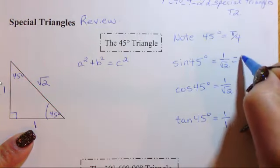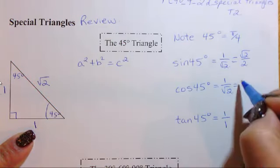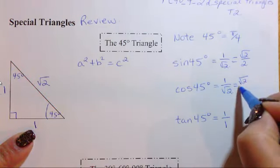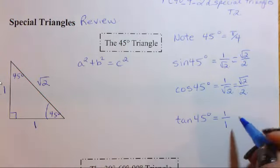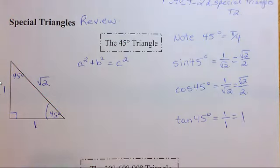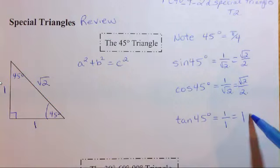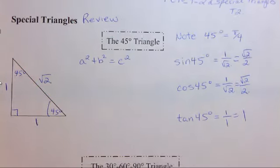All right, so why don't we rationalize and simplify everything. So we'll rationalize this so that there is no root 2 in the denominator, so we get root 2 over 2, and this reduces to a 1. All right, so these are the exact values that we are going to be using for our answers.